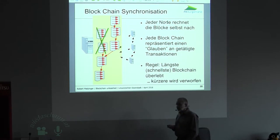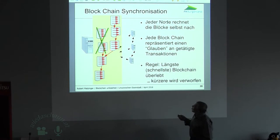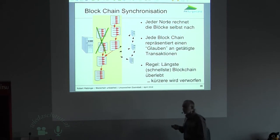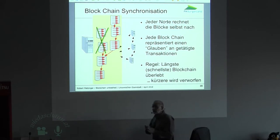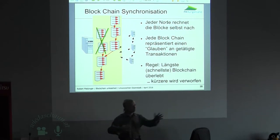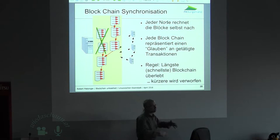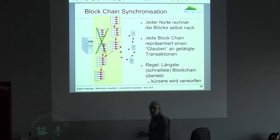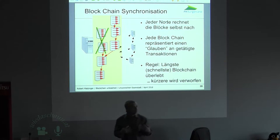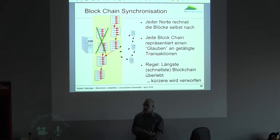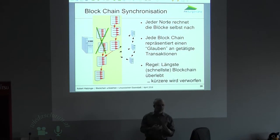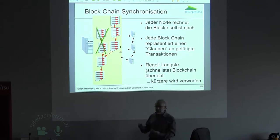Wie funktioniert das jetzt? Die Idee ist einfach: Wenn ich die Kunde von mehreren verschiedenen Blockchains bekomme — also ich schaue ins Netzwerk und sehe, die einen sind der Meinung, diese Blockchain ist gültig, die anderen sind der Meinung, jene ist gültig, wir brauchen eine Abstimmung — dann lautet die Regel einfach: Die längste Blockchain gewinnt. Ich glaube immer an die längste Blockchain, die ich sehe.